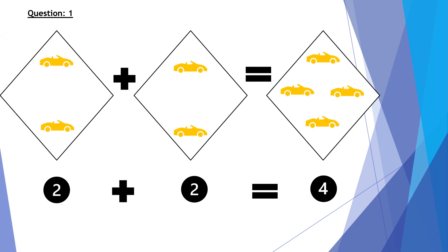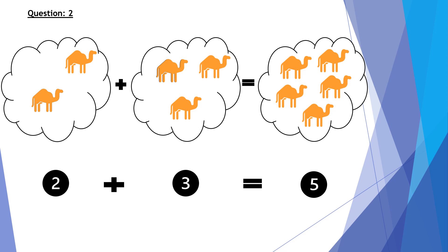Question number one: two cars plus two cars equals four cars. So in the number form, two plus two equals four. Question number two: two camels plus three camels equals five camels. So in the number form, two plus three equals five.